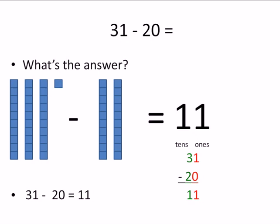So what is our answer? It's 11. And I wrote the problem two different ways across. 31 minus 20 equals 11. And I wrote it up and down with colors. The red is the ones. One minus zero equals one. And the green is the 10s. Three minus two equals one. Easy peasy, right?